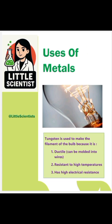Next is tungsten. Tungsten is used to make the filament of the bulb. Because number 1: it is ductile, meaning it can be molded into wires. Number 2: it is resistant to high temperatures. Number 3: it has high electrical resistance, due to which when electricity passes through it, it glows and produces heat and light.